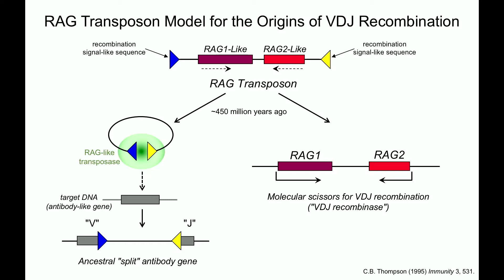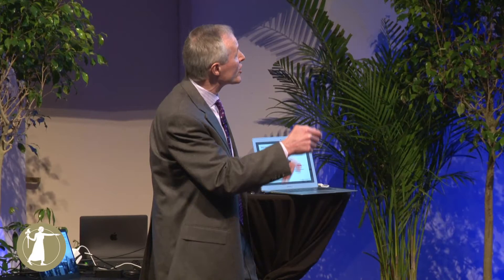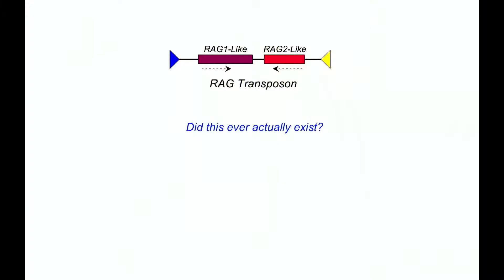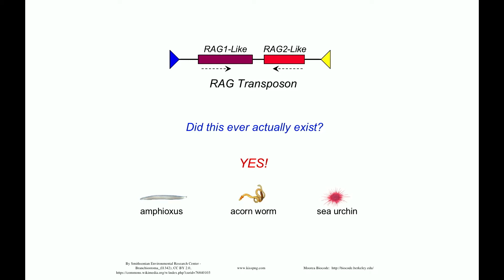This theory was great. It explained the origin of the genes and explained why RAG1 and RAG2 were right next to each other — because they were right next to each other in this jumping element. But when first proposed, the RAG transposon itself was completely hypothetical; we didn't know whether it existed. Fortunately, as more and more genomes were sequenced, elements that look just like this were found in all sorts of organisms — a whole bunch of invertebrates, the most evolutionarily distant being the sea urchin. This strongly suggested that the RAG transposon model was correct, and it's now widely accepted in the field.